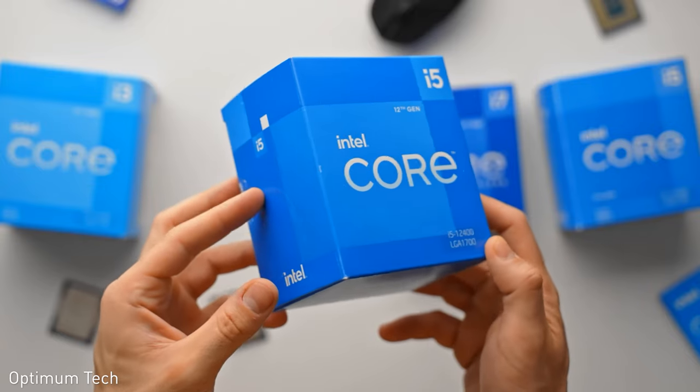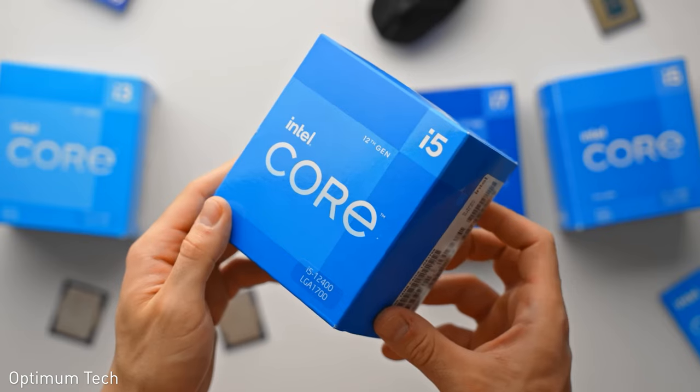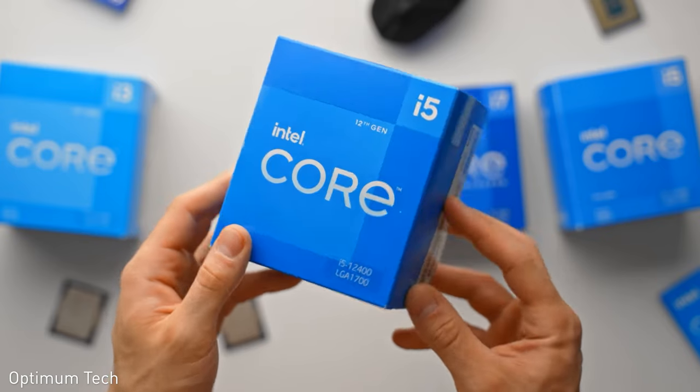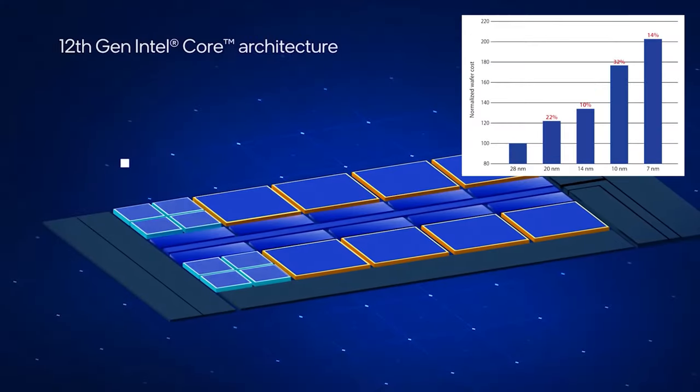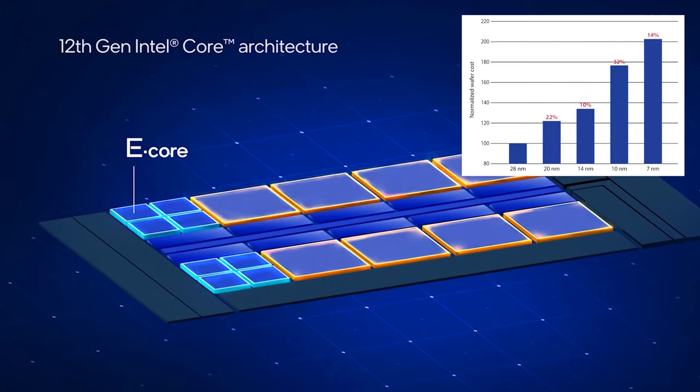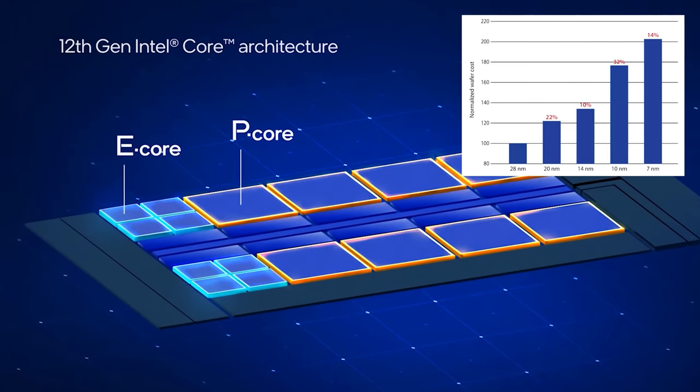For example, in the case of Intel, their 10 nanometer chips such as the 12th generation Core CPU cost the company twice as much as the 28 nanometer Core CPU of the 4th generation. And every new process node, although it being marketing, requires huge costs for the most complex machines and scientists who dig into the depths of the universe.